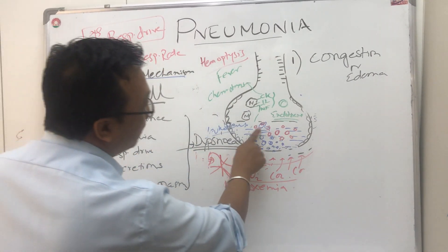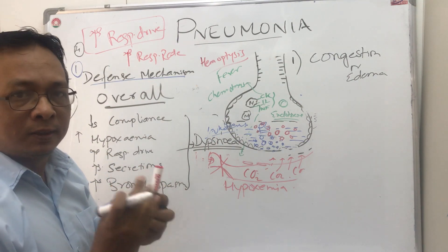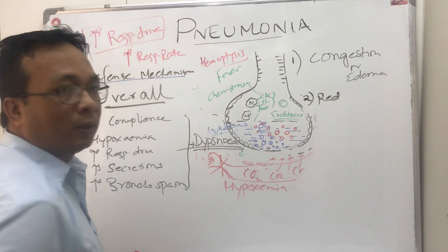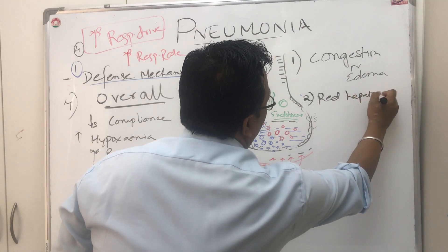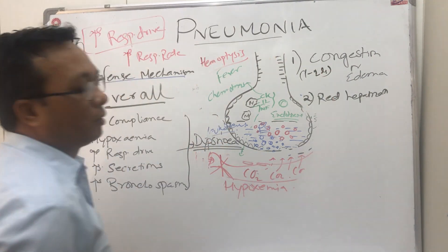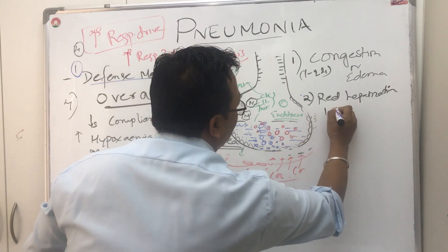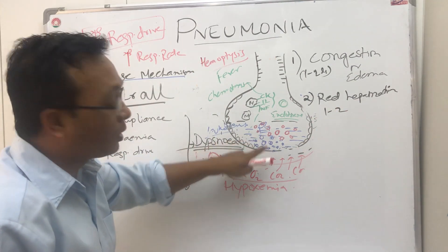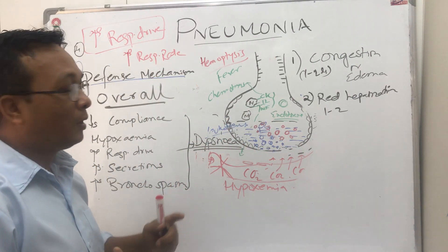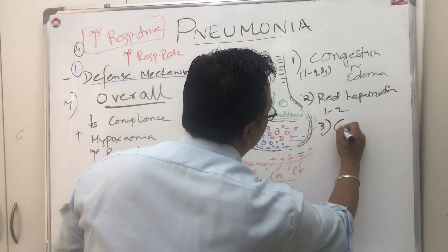After congestion or edema, there are red blood cells coming here and it becomes a little thick — like the consistency of liver — so we call it red hepatization, because of the presence of erythrocytes. This stays for one to two days. After another two days, these erythrocytes start dying and, with no new influx of erythrocytes, this thing turns grayish in color — what we call gray hepatization.